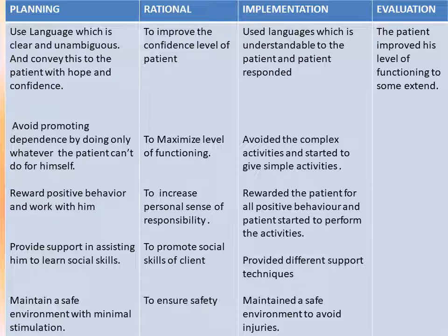The eighth planning step is to maintain a safe environment with minimal stimulation. A safe environment is very important because there is always a risk for injury, even when all other planning is in place. The rationale is that prevention is better than cure — this ensures safety and avoids injury. These are the major planning steps for Risk for Injury. If any injury does occur, these plans must be revised. For evaluation: the patient improved their level of functioning to some extent — complete independence may not be achieved, but improvement in functioning is the expected outcome.